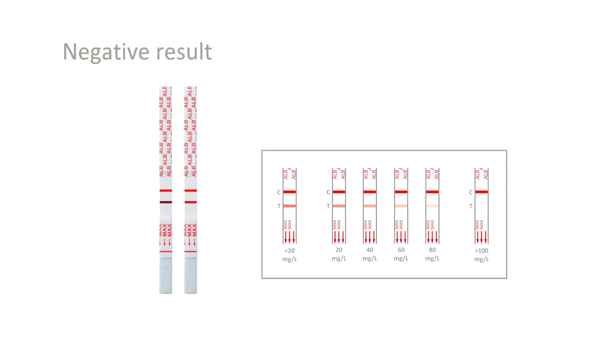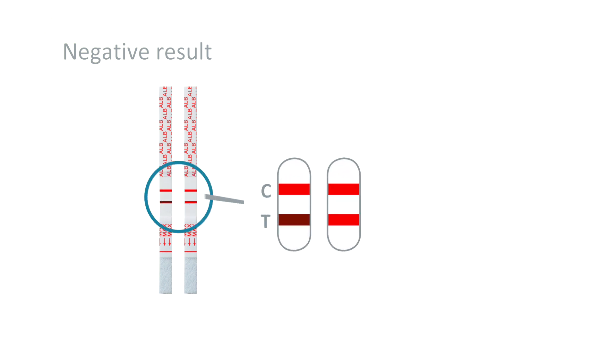A test line with the same or a stronger intensity than the color of the less than 20 mg per liter line on the color scale indicates a negative result. The albumin concentration is within a range which can be considered harmless.